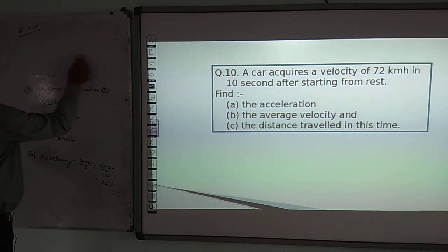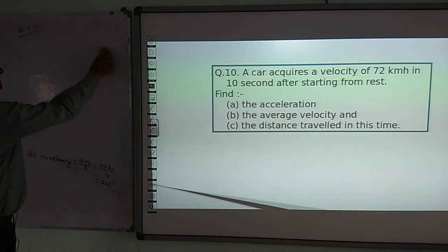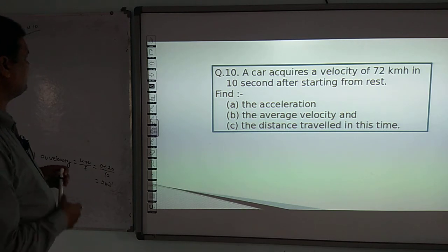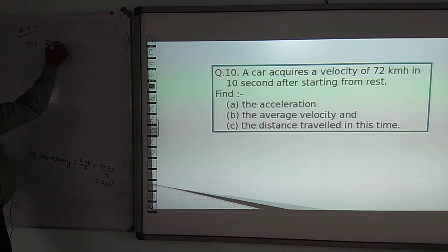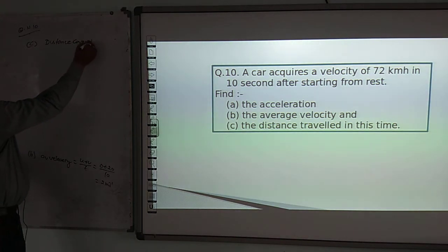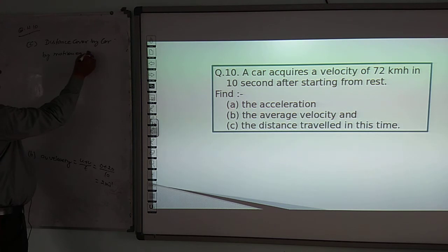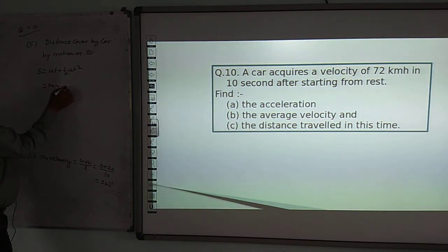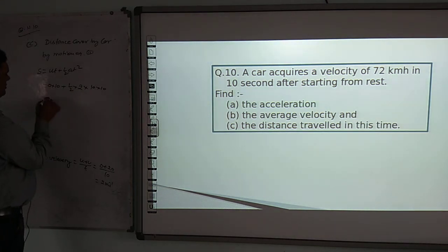For the distance travelled, we can use two formulas — the second or third equation of motion. Here we use the second equation of motion: s = ut + ½at². So s = 0 × 10 + ½ × 2 × 10².